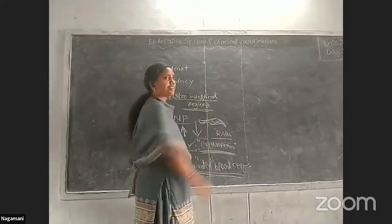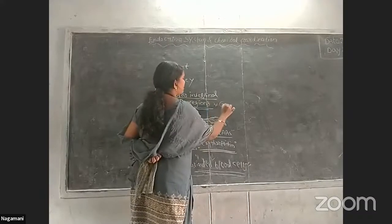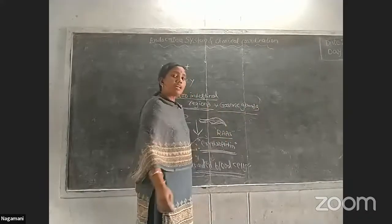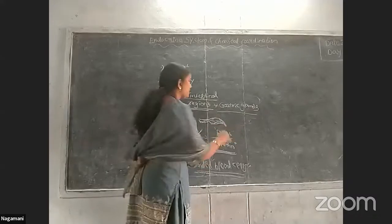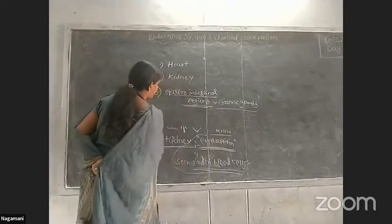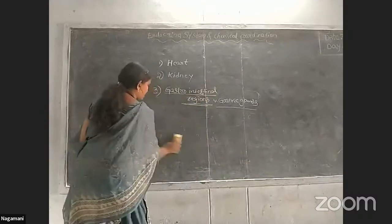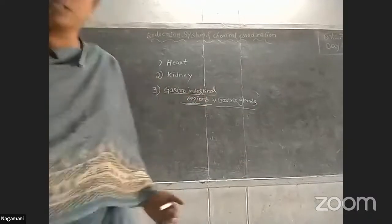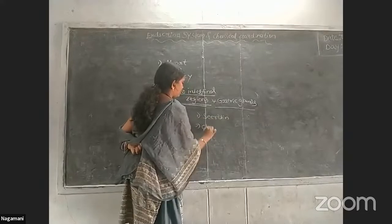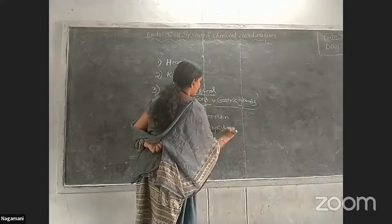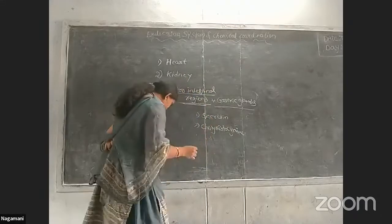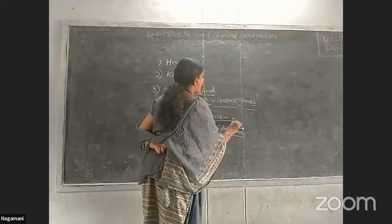Next is the gastrointestinal region where gastric glands are present. The hormones released from the gastric glands include secretin and cholecystokinin, among other hormones.